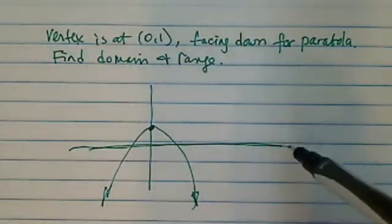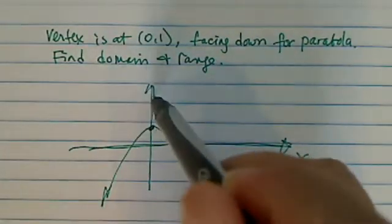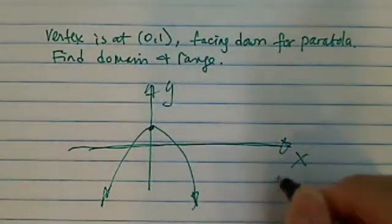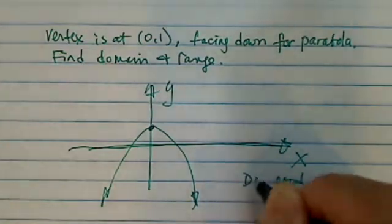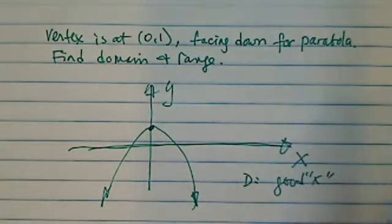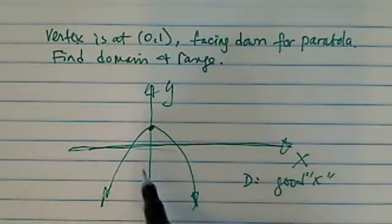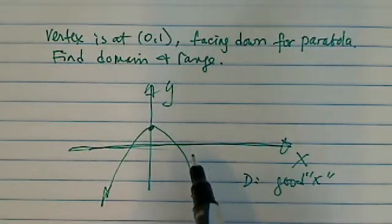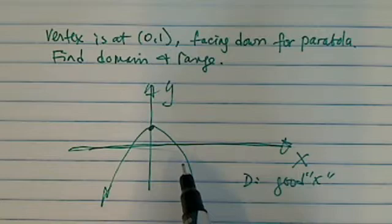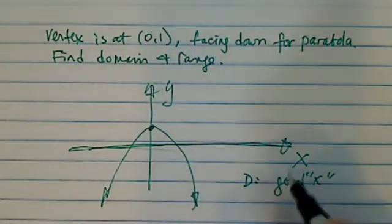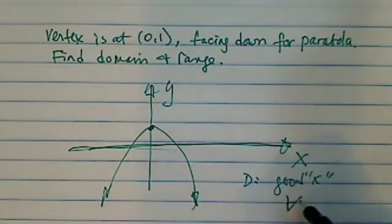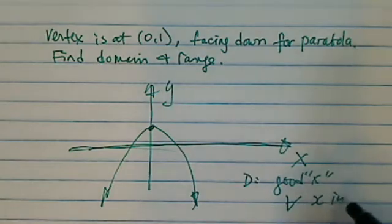Okay, so domain, let's remind ourselves domain is where are the good x values. Domain is good x. Okay, so when we look at this graph, there's no x that's bad. There's no holes or nothing that's undefined for the function. So domain is for all x's in real.